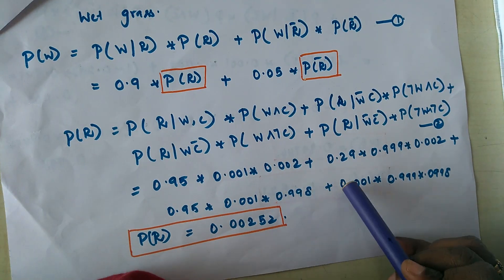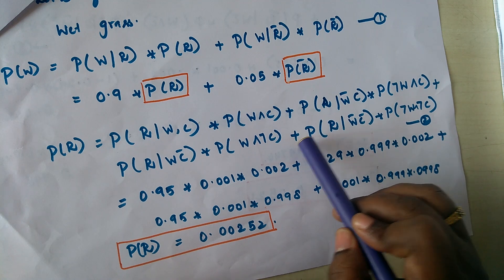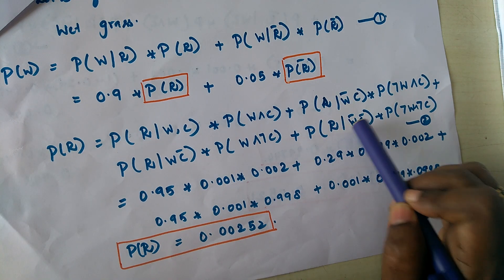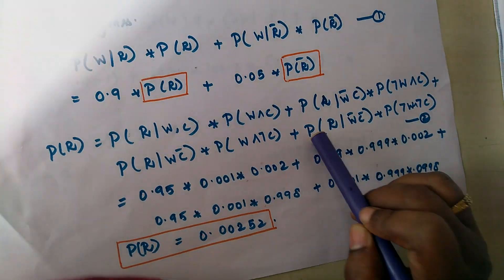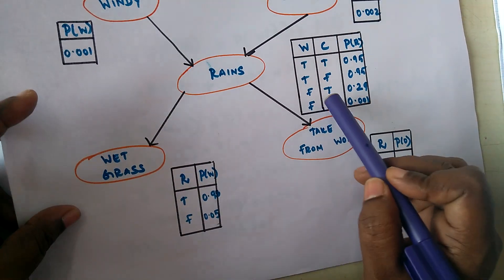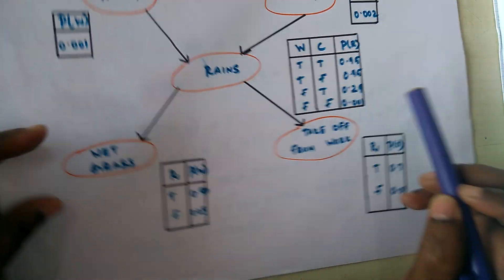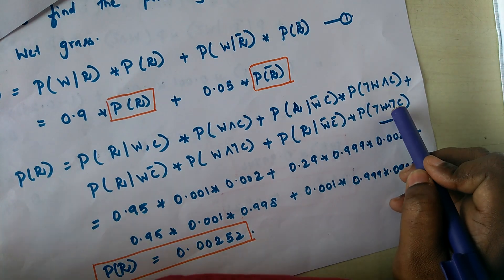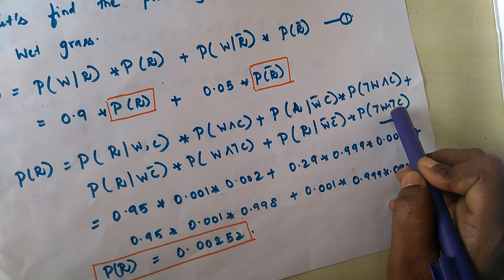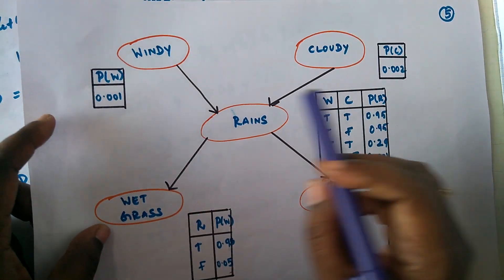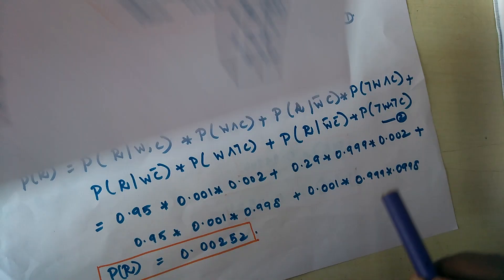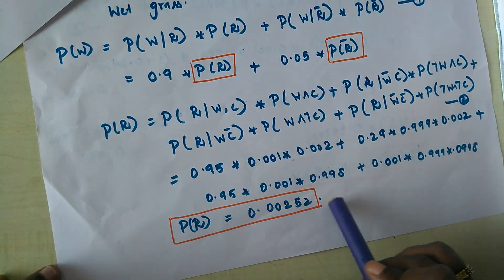For the fourth factor, given it is not windy and not cloudy, the probability of rain is 0.001. The joint probability of not windy and not cloudy is (1 minus 0.001) multiplied by (1 minus 0.002). That is how we obtain this value, and we now understand how to calculate the probability of rain.